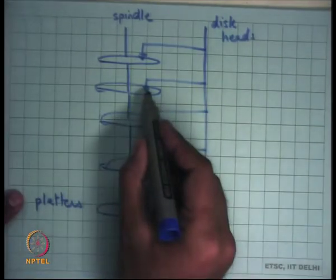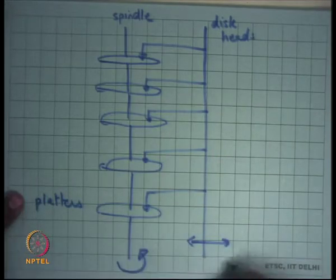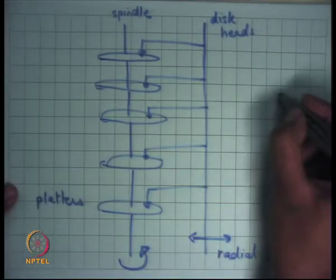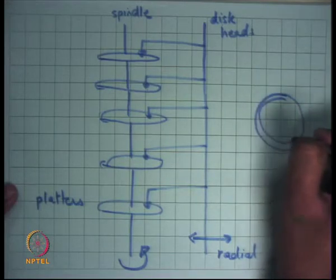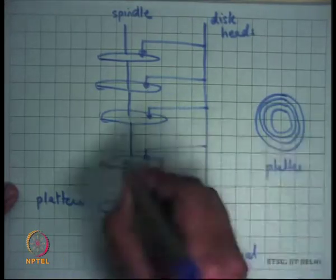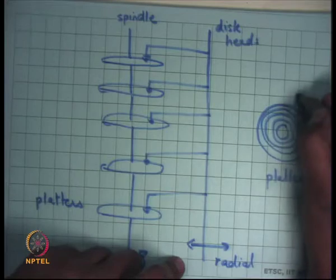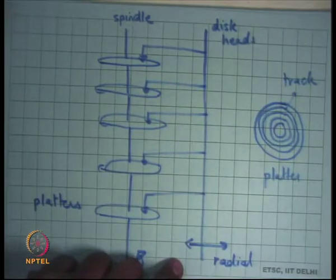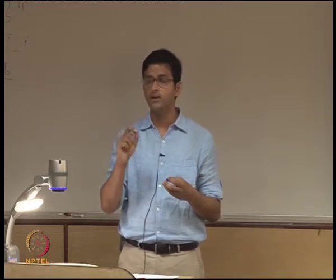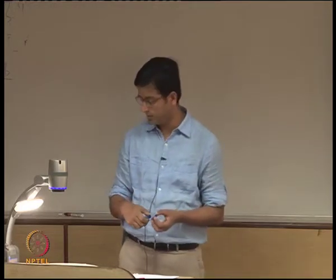The disk head can move radially to allow access to any location. Looking at a platter from the top, it has concentric rings — each ring is called a track. The disk head moves radially to position itself on a track. Because the spindle is rotating, it will eventually reach the position it wants and be able to read data from the disk.